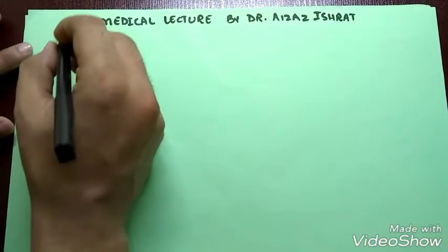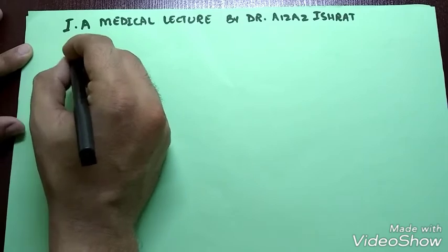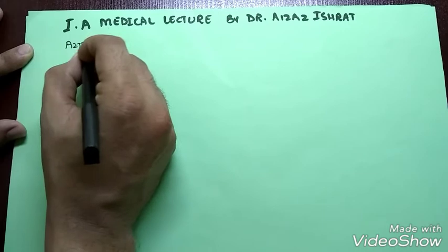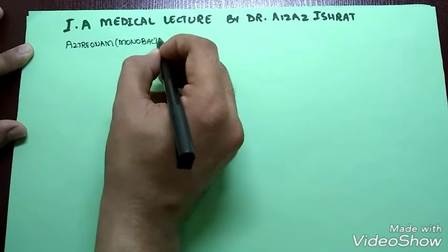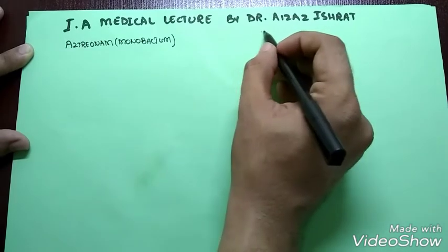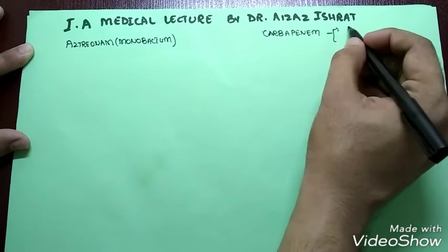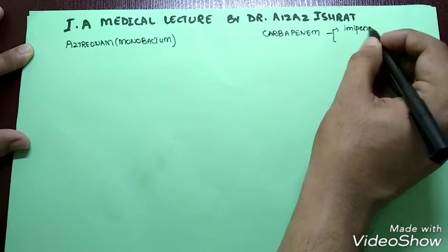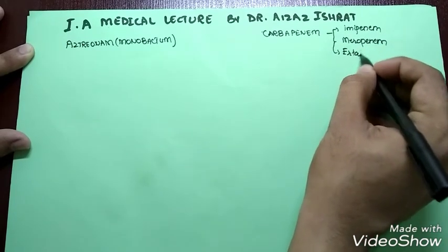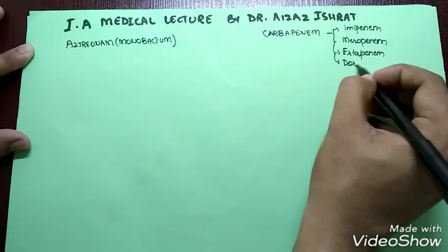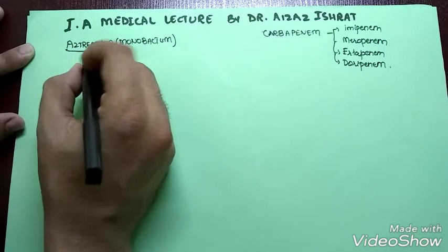We are back and we were discussing the penicillin and its relatives. Now it is time for the other beta-lactams: aztreonam, which is a monobactam, and of course the carbapenems. We know that carbapenems have four drugs: imipenem, meropenem, ertapenem, and the last one, doripenem.